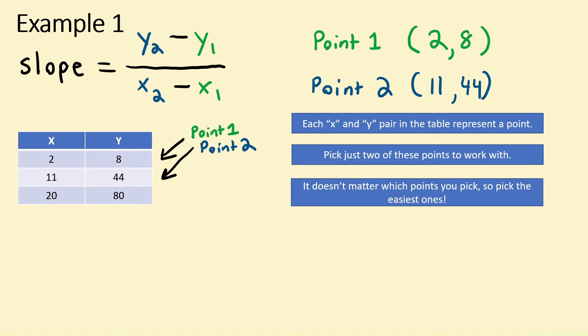Now let's start plugging our values into the actual formula. Again, our y2 is 44, our y1 is 8, and our x2 is 11 and our x1 is 2. Now that we have our formula filled out, we can solve. 44 minus 8 is 36 over 11 minus 2 which is 9.